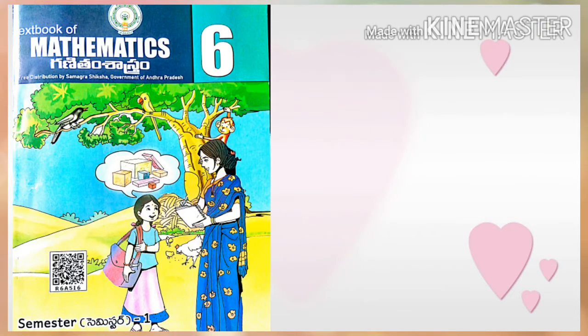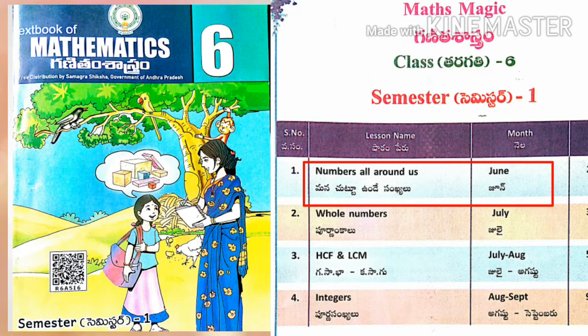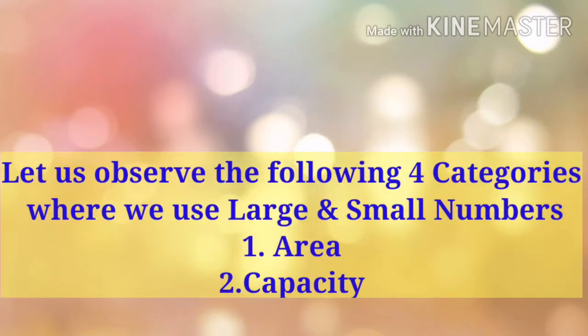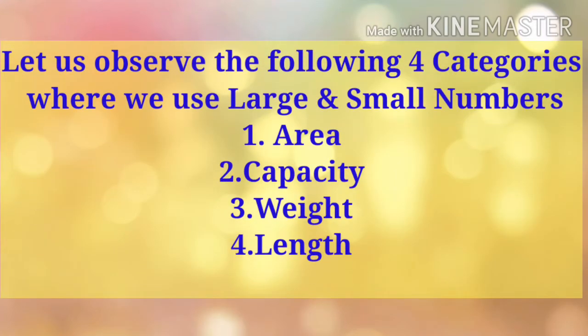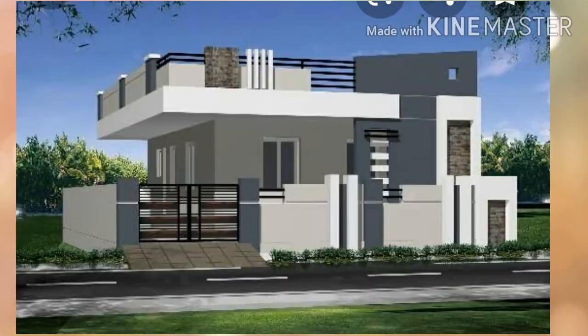Welcome to ShekharMass. Today we are going to learn sixth class mathematics, semester one, first chapter: Numbers All Around Us, part four — use of large and small numbers. Let us observe the following four categories where we use large and small numbers: number one, area; number two, capacity; number three, weight; and number four, length.